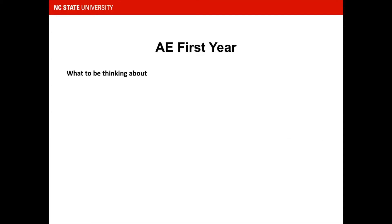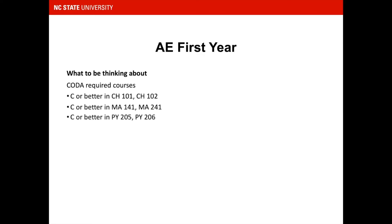What should you be thinking about in your first year? CODA required courses. A C or better is required in Chemistry 1 and the lab. Calculus 1 and 2 also require a C or better, as does the first physics course and lab. A PASS or S in E115 and a C-minus or better in English 101 and E101 are also requirements for engineering CODA.